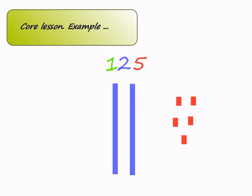As for the left digit, which is 1, it is in the hundreds place, so its place value is 100. We indicate this by using one orange flat.